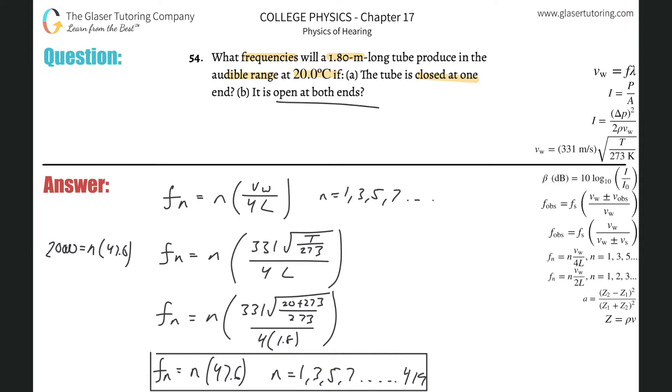And then letter B, now it says open at both ends. So what do you think we're going to do? Well, we're going to use the alternative formula. The frequency of the nth harmonic is equal to the nth harmonic multiplied by the velocity of sound through air divided by 2 times L, where n can now be 1, 2, 3, 4, and so on.